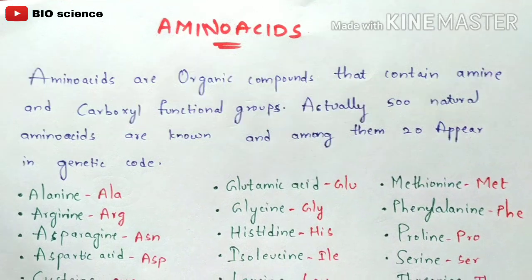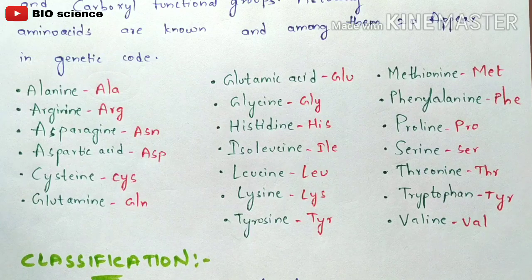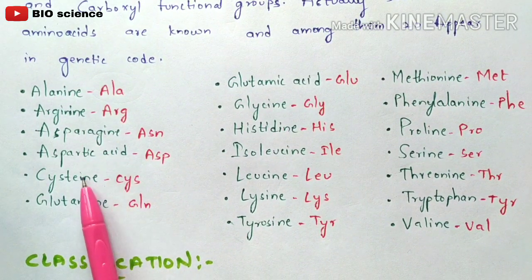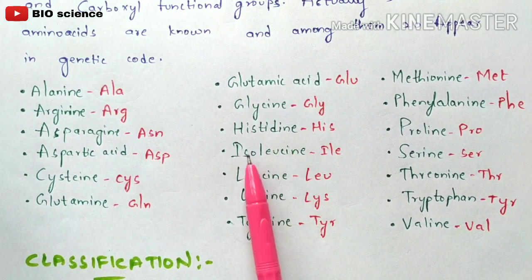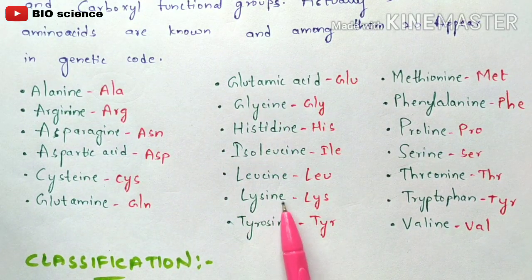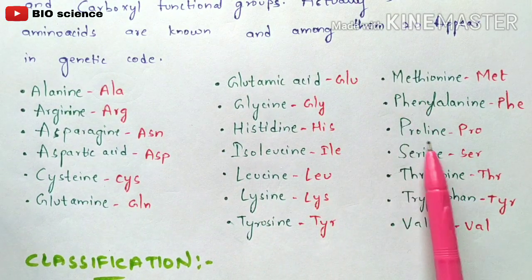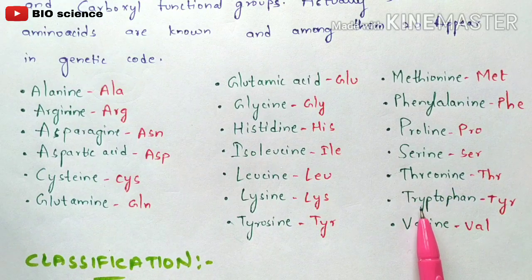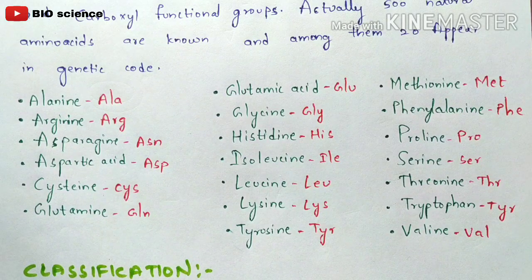So what are those 20 amino acids? This is the list: alanine, arginine, asparagine, aspartic acid, cysteine, glutamine, glutamic acid, glycine, histidine, isoleucine, leucine, lysine, tyrosine, methionine, phenylalanine, proline, serine, threonine, tryptophan, and valine. These are the 20 amino acids which have been discovered.